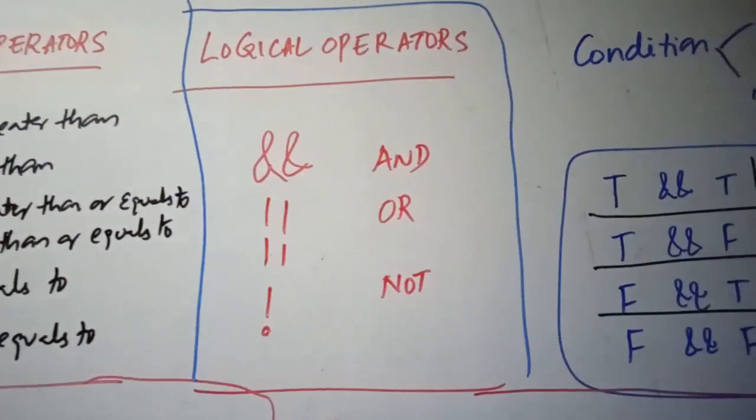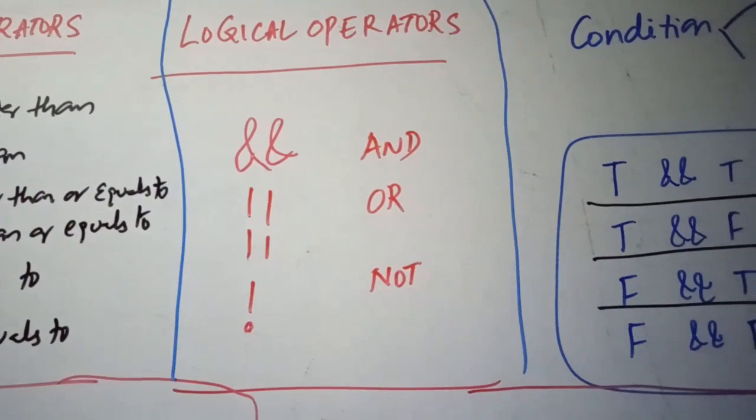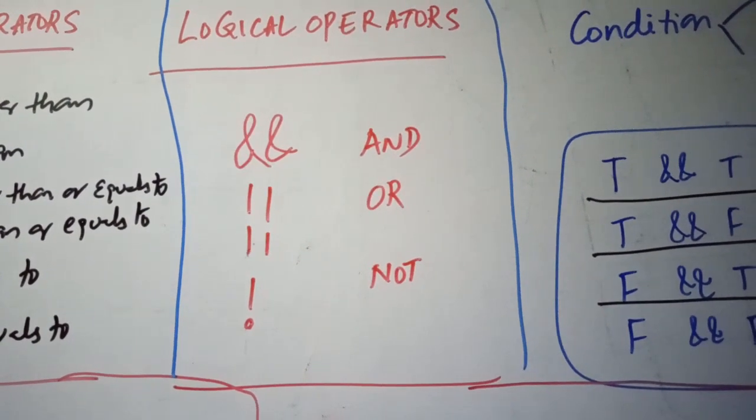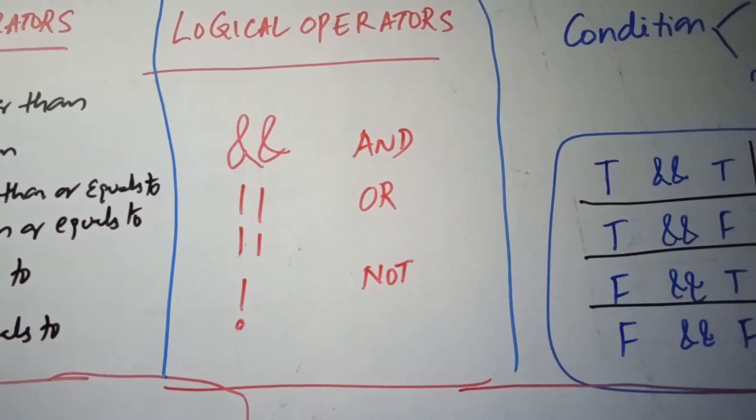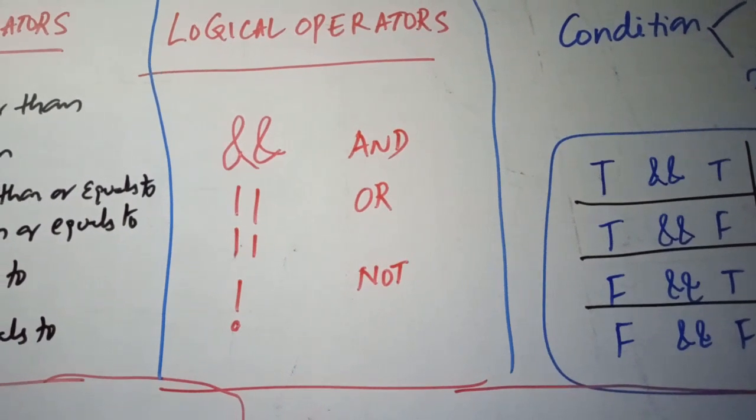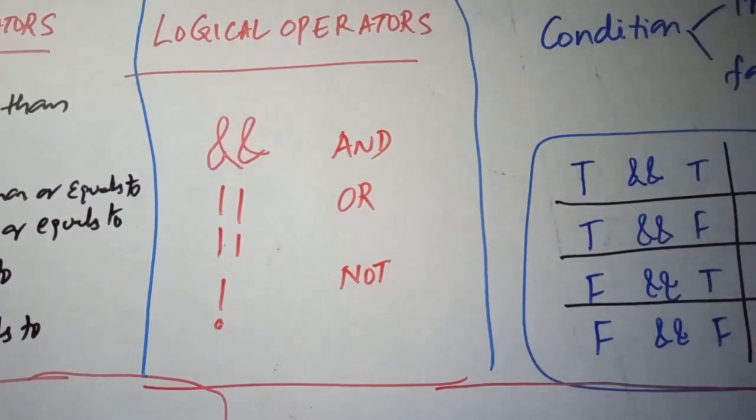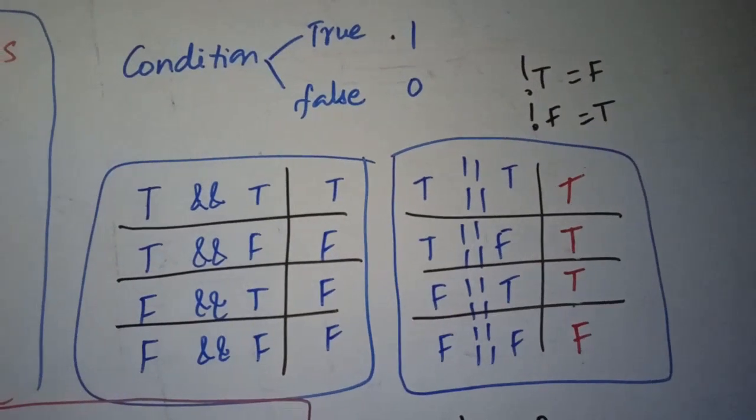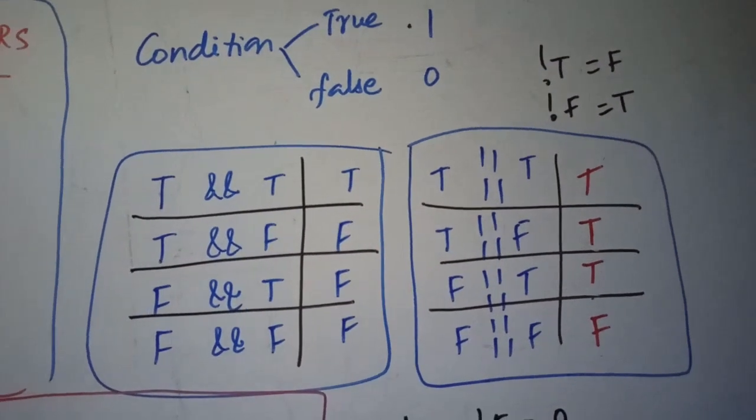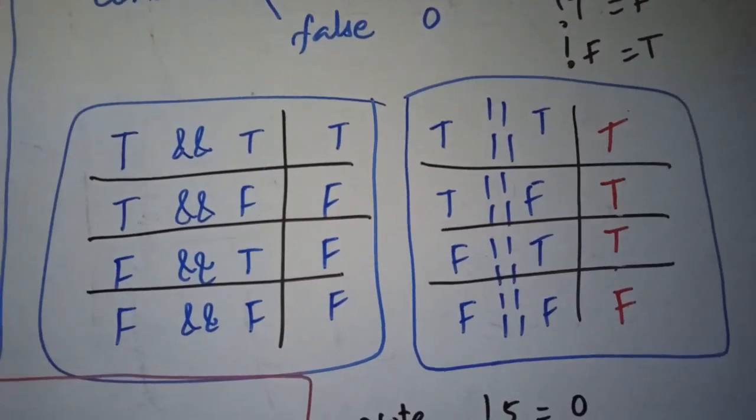Logical Operators, we have and or not, three operators. And we use when we want to check more than one condition, means any combination of two conditions. So look at the Logical Operators, not true is false and not false is true and look at the tables.